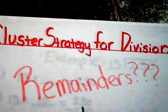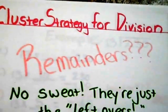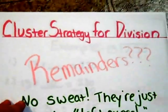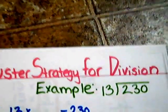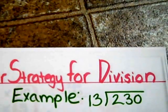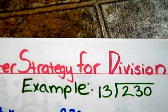But what about remainders? No sweat. They are just the leftovers. Example: 230 divided by 13.